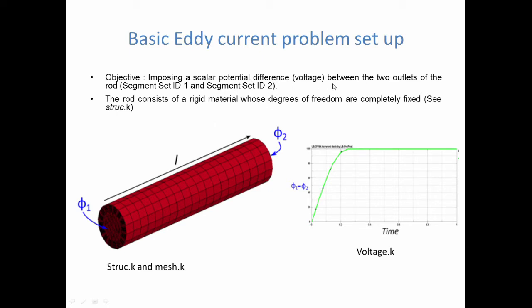And so the shape of this voltage of this scalar potential difference will be defined by the load curve contained in voltage.k file. This is what you see on the right there.